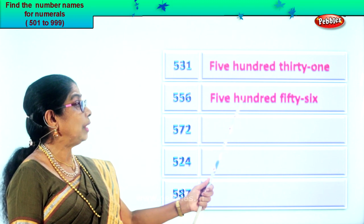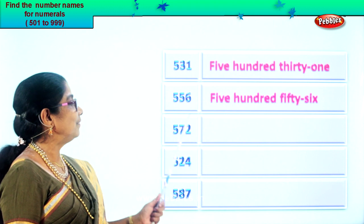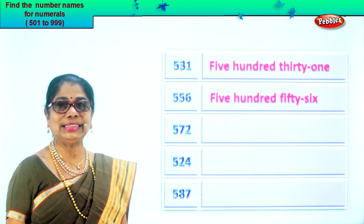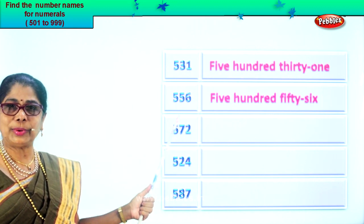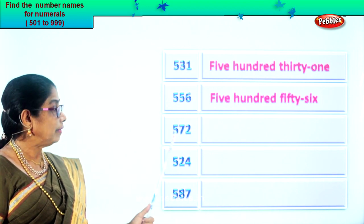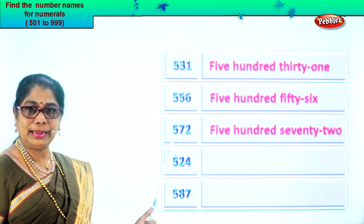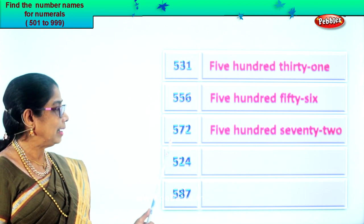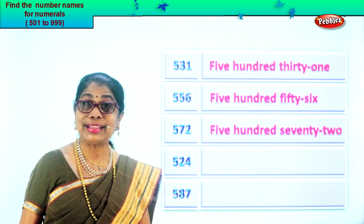So first we write the number name five hundred, then we write seventy-two. Five hundred seventy-two.